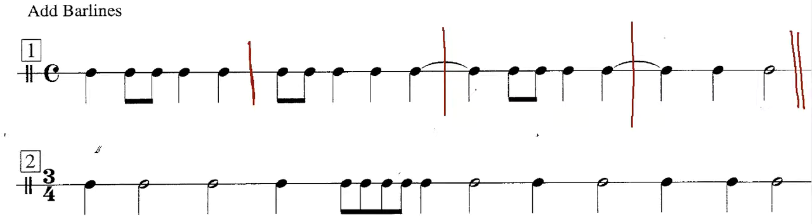The next example has 3-4 meter, which means that there are three beats per measure, each quarter note takes a beat. So let's count. The first quarter note, second quarter note, and third quarter note are accounted for by the half note, so bar line.